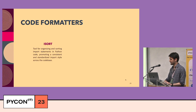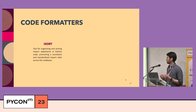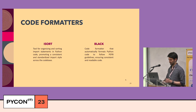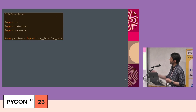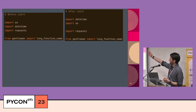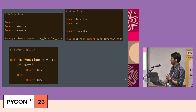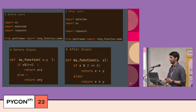Now let's move on to code formatters. First is iSort — a tool for organizing and sorting import statements in Python code, promoting a consistent and standardized import style across the codebase. The second tool is Black, a code formatter that automatically formats Python code to follow PEP8 guidelines, ensuring consistent and readable code. With iSort, imports are automatically grouped into standard libraries, third-party libraries, and local application modules. With Black, white space issues are automatically fixed — you run it and voilà, the code looks much better.